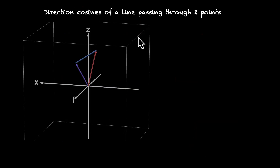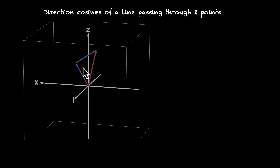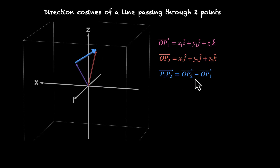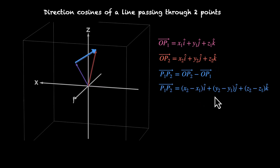Now, how do we find the direction cosines of a line passing through two points? The same approach as for vectors. If P1 and P2 are two points with position vectors OP1 and OP2, then the vector P1P2 = OP2 − OP1. This gives P1P2 = (x₂−x₁)î + (y₂−y₁)ĵ + (z₂−z₁)k̂.